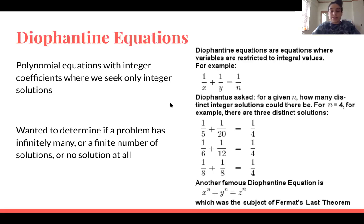Okay, these are Diophantine equations that Diophantus used and created. They're essentially polynomial equations with integer coefficients where we seek only integer solutions. He wanted to determine basically if a problem had infinitely many solutions, a finite number of solutions, or no solution at all. And then this picture right here just shows a couple of examples of Diophantine equations, and I will also elaborate on my next slide with a couple of examples.